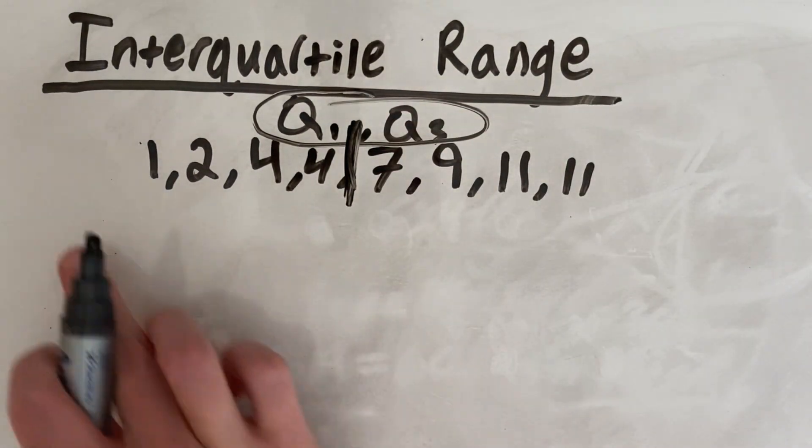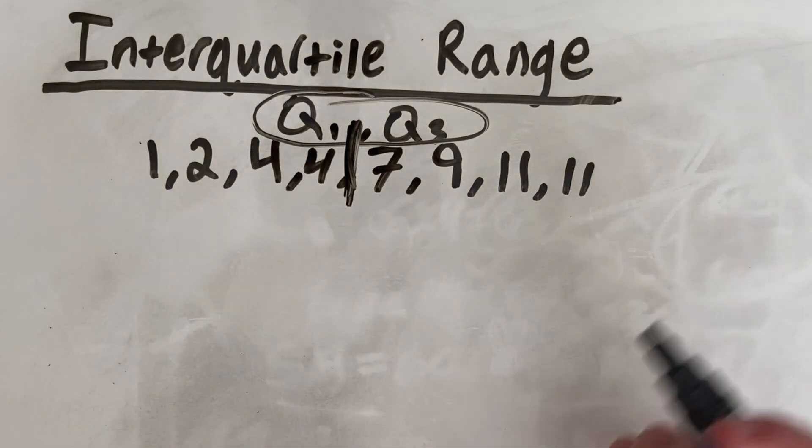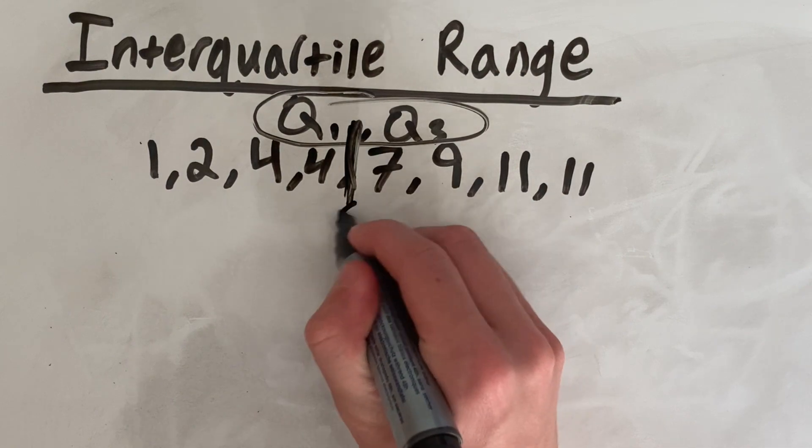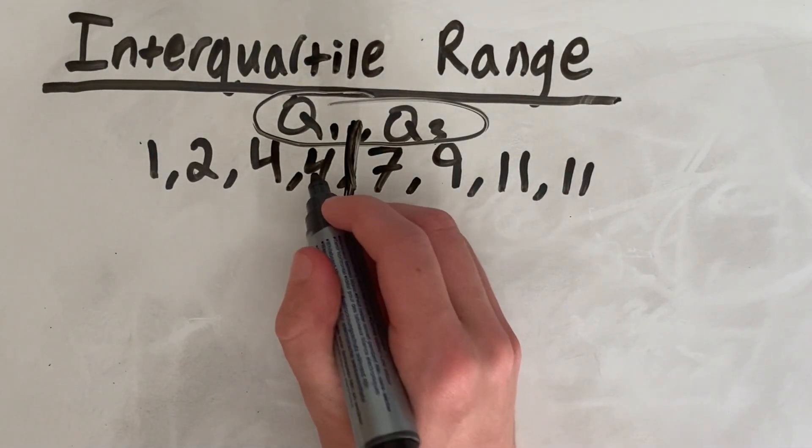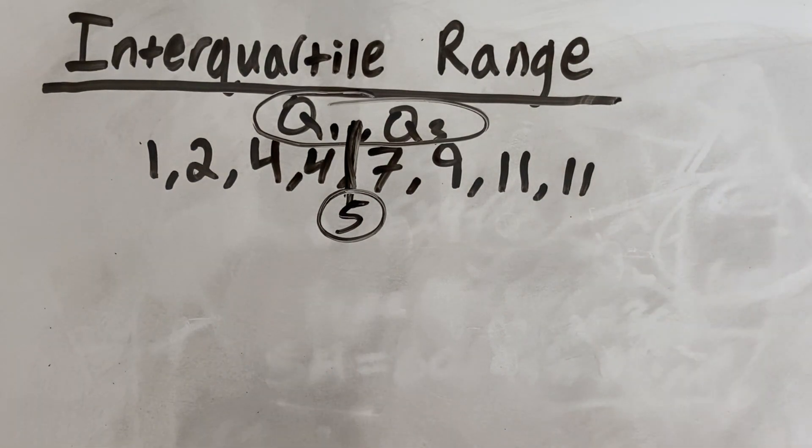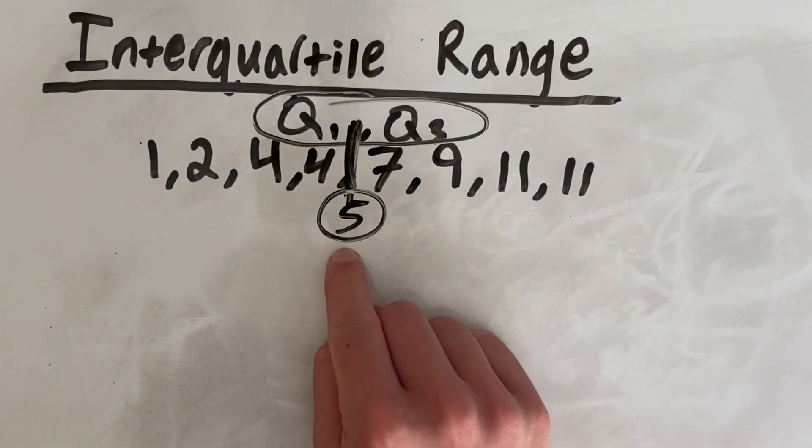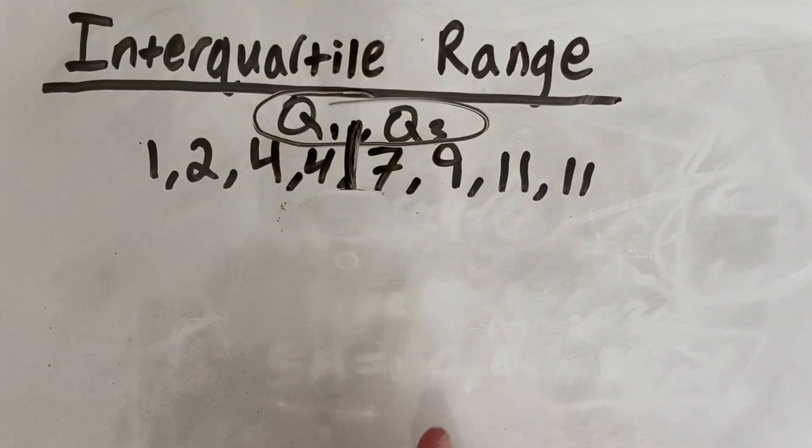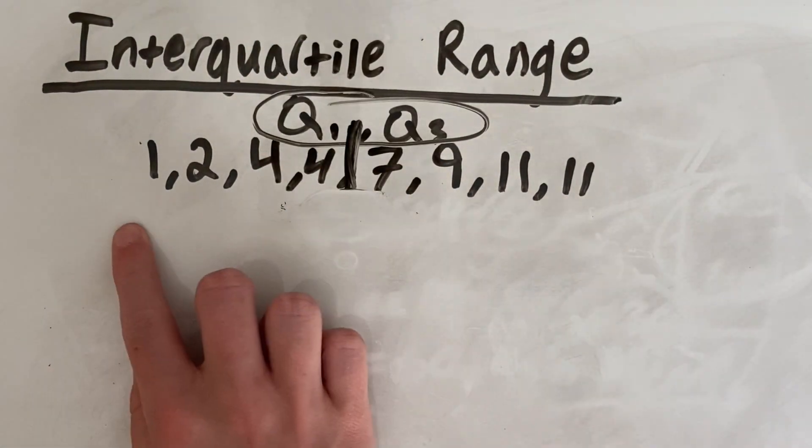If I had an odd amount, I would've had a middle number. Say for example, I had a 5 in between this 4 and the 7. Then my middle number would be 5. But regardless of whether you have a middle number, or your middle number is in between two numbers, the point of this is to split the data in half.